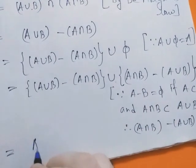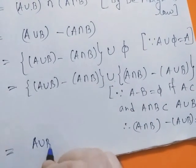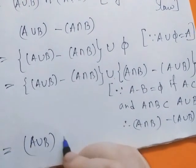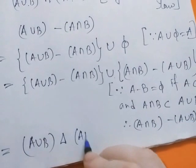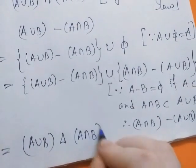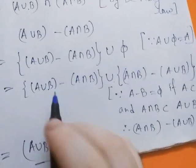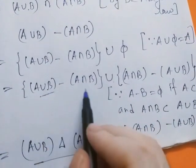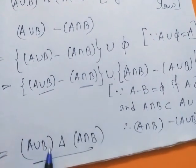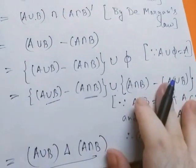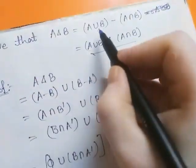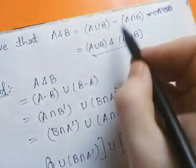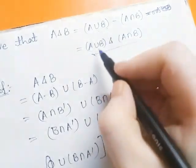So this equals (A ∪ B) Δ (A ∩ B), which is simply A Δ B. Therefore we have proved A Δ B = (A ∪ B) − (A ∩ B) = (A ∪ B) Δ (A ∩ B).